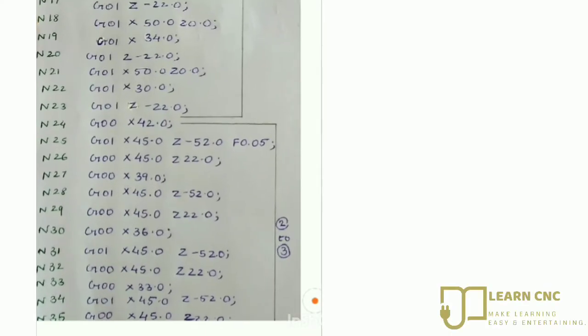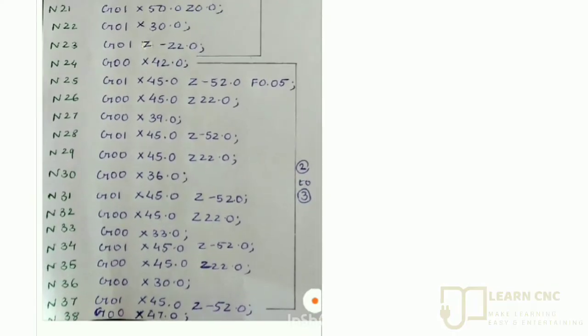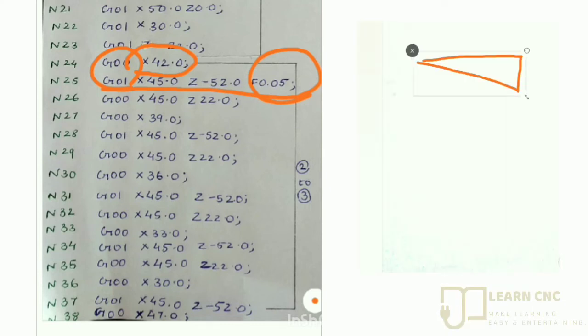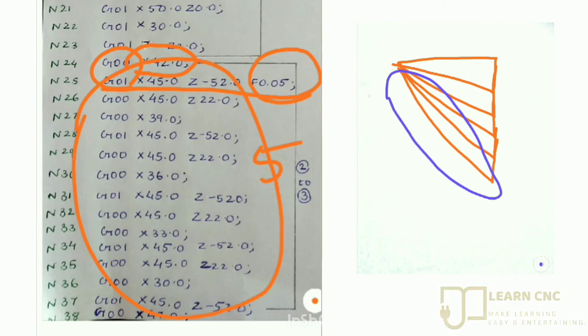Likewise, we are reducing 3mm for 5 times from the final length that is 45mm. So here 45 minus 3, that is X equals 42. Then taking the value of X and Z, X45 and Z minus 52. At the same time in a line using feed 0.05 and G01, the tool will travel in an inclined manner creating a taper. We have to repeat this process for 5 times by reducing 3mm each time to get the final taper.